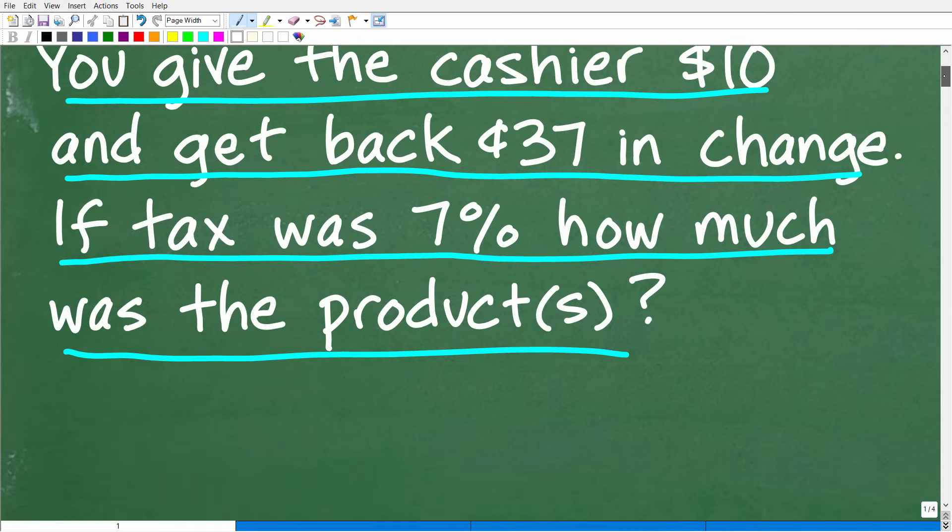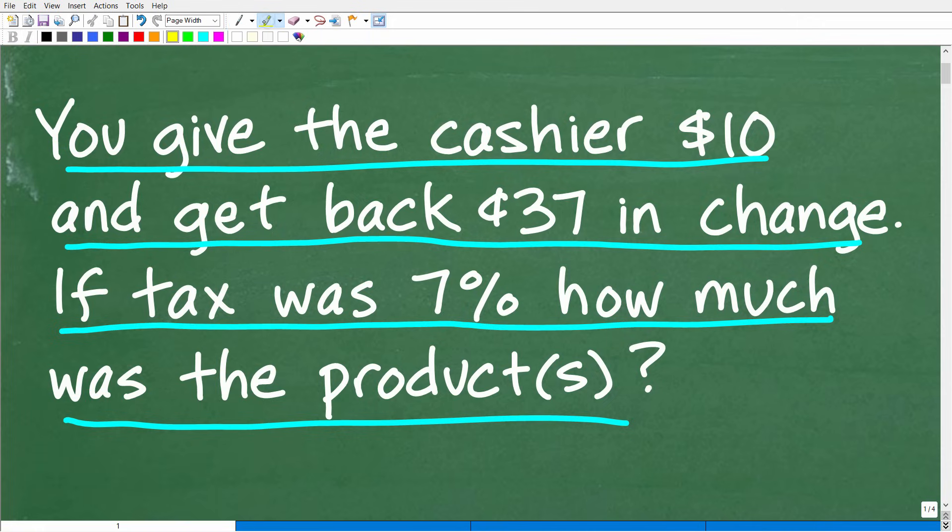Alright, so one more time before I show you the answer. We go to the store, we're going to buy a product or products. And when we go to the cashier, we give them $10 and we get back $0.37 in change. Now, of course, we had sales tax of 7%. How much was the cost of the product or products? Alright, so that's the question. Let's go ahead and take a look at the answer.